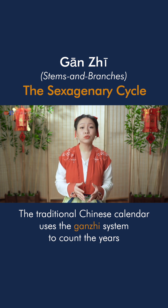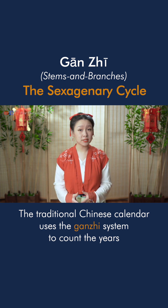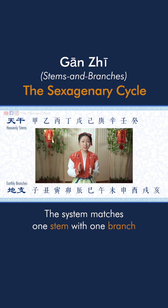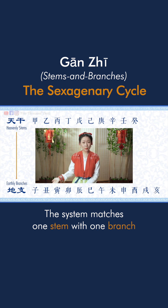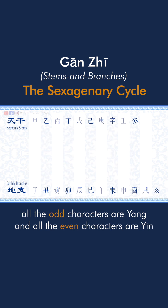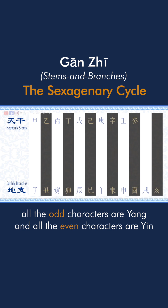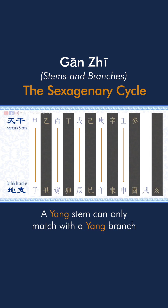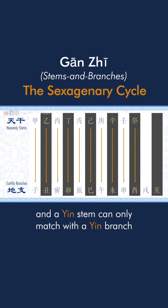The traditional Chinese calendar uses the ganzhi system to count the years. The system matches one stem with one branch, and every stem and branch has an attribute of either yin or yang. All the odd characters are yang and all the even characters are yin.